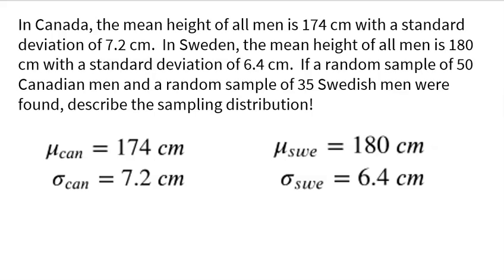In Canada, the mean height of all men is 174 centimeters with a standard deviation of 7.2 centimeters. In Sweden, the mean height of all men is 180 centimeters with a standard deviation of 6.4 centimeters. If a random sample of 50 Canadian men and a random sample of 35 Swedish men were found, describe the sampling distribution.